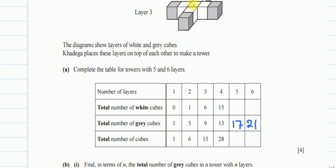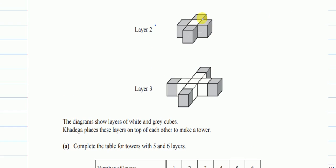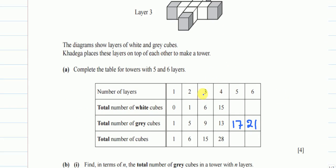For white cubes, they take the number of gray blocks from the previous layer and those become white in the current layer. So if there were five gray in the previous layer, five more become white. We had one white originally, plus five gives six. Then six plus nine gives fifteen. Then fifteen plus thirteen gives twenty-eight. So 28 plus 17 gives us 45.